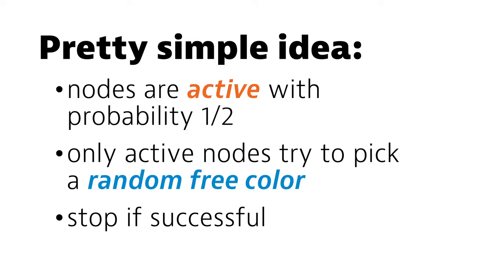And it's clear that if it ever stops, coloring has to be proper. But why does it stop fast with high probability?